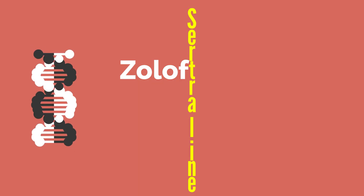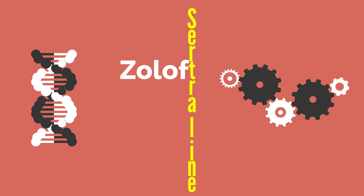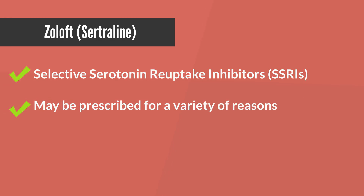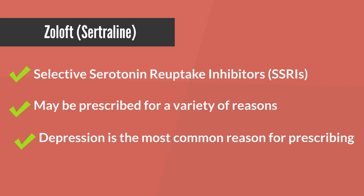Today, I'll be briefly taking a look at the medication Zoloft or Sertraline. We're basically going to be taking a look at how it works, or its mechanism of action. Zoloft or Sertraline belongs to a class of medications called selective serotonin reuptake inhibitors, or SSRIs, and they may be prescribed for a variety of reasons. Since depression tends to be the number one reason why Zoloft may be prescribed, we are going to take a look at the mechanism of action of Zoloft in reference to its use in the treatment of depression.